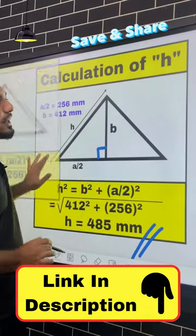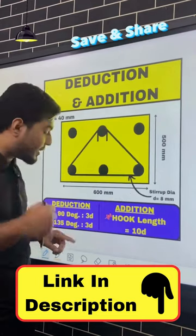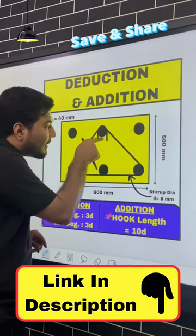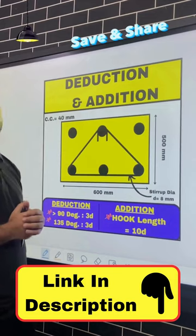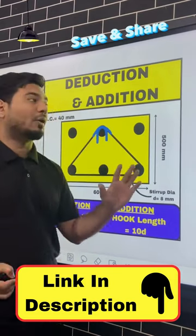We will have the formula here. We have two times A on one side. We have two times the hook length of 135 degrees, so two times 10d. When we account for the bends, we will add and deduct accordingly. We have to calculate them.